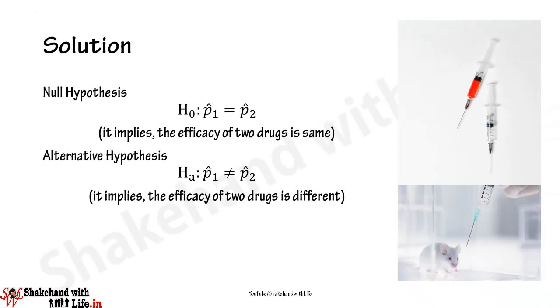The research unit wants to test whether there is a difference between the efficacy — that is, the effectiveness — of the two drugs. Can we conclude that the effectiveness of the two drugs is different at the five percent significance level? The null hypothesis is H₀: p1-cap equals p2-cap (the efficacy of the two drugs is the same), and the alternative hypothesis is Hₐ: p1-cap not equal to p2-cap (the efficacy of the two drugs is different).